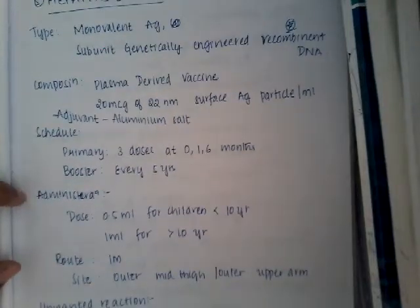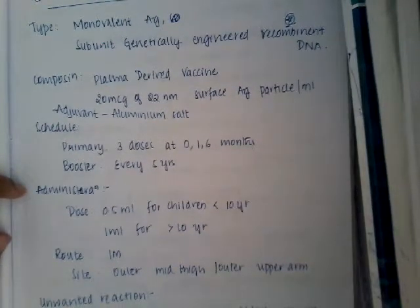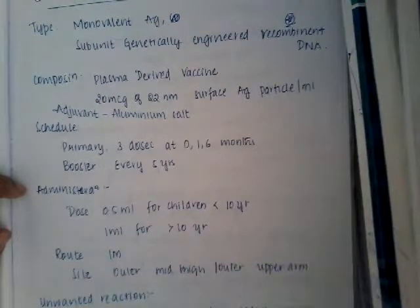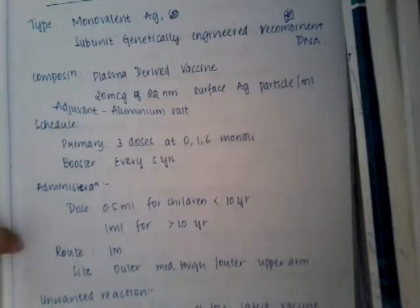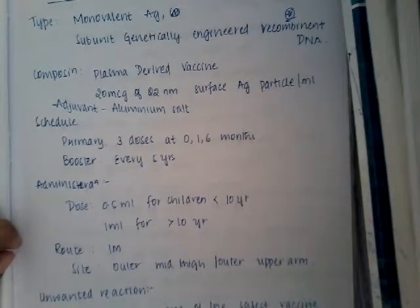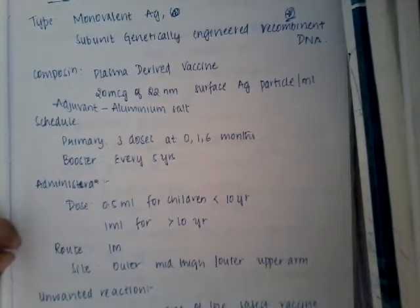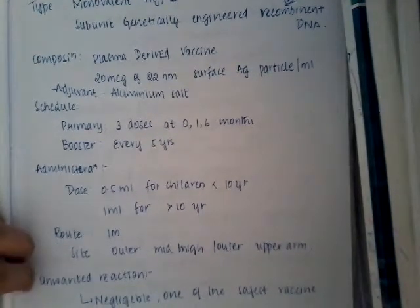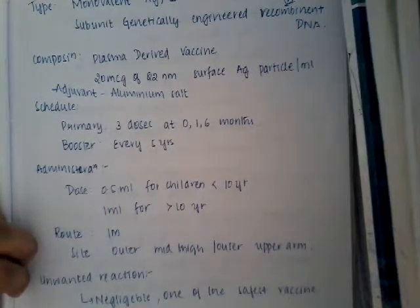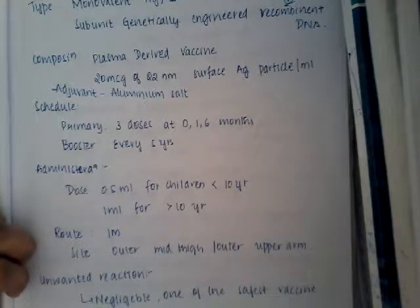For administration, we give a 0.5 ml dose for children less than 10 years. If the children are more than 10 years, we give a dose of 1 ml. The route is intramuscular, given on the outer mid thigh or outer upper arm.